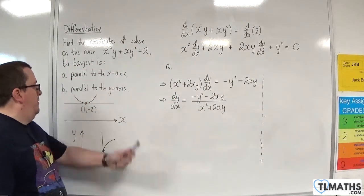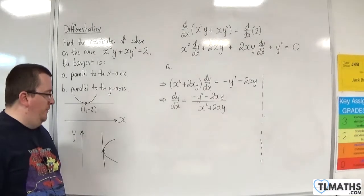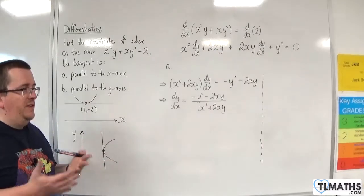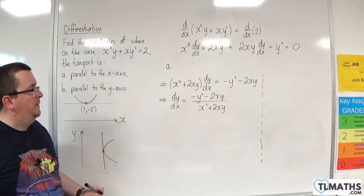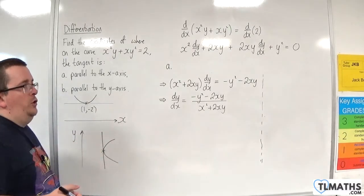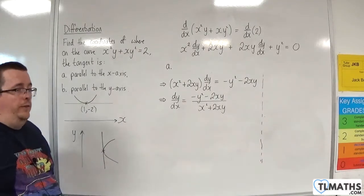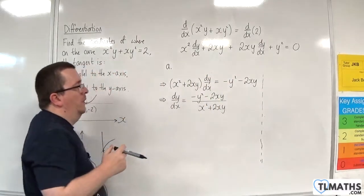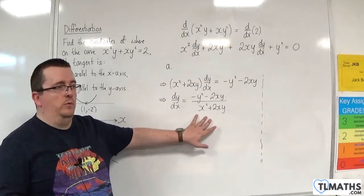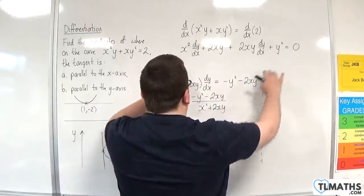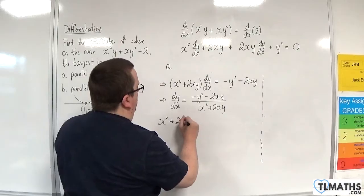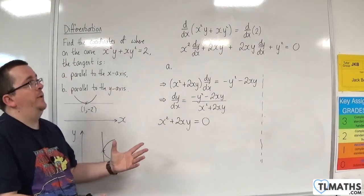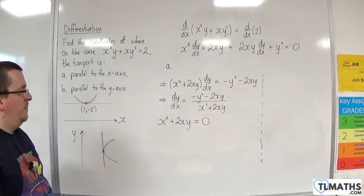When we're parallel to the y-axis, the gradient will need to be infinite. I'm not going to write down that dy/dx equals infinity, because you can't be equal to infinity - you can't use infinity like a number. So one way you could do this is just write it in words: infinite gradient occurs when the denominator is 0. So I know that I need to look for x squared plus 2xy equals 0 - I need the denominator to be 0.